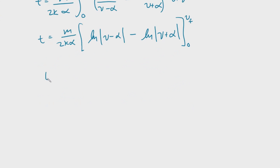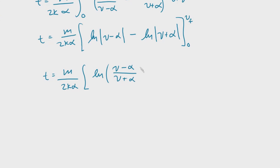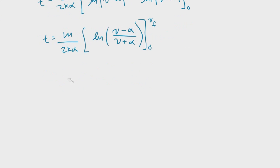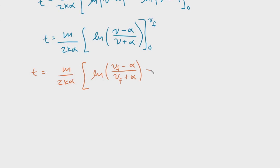Using logarithmic properties, we simplify to ln of the quotient |(V minus alpha)/(V plus alpha)|, evaluated from 0 to V final. Plugging in the limits: T equals M over (2K·alpha) times [ln|(VF minus alpha)/(VF plus alpha)| minus ln|(-alpha)/alpha|]. The lower limit gives ln of negative 1 in absolute value, which is ln(1) = 0, so that term vanishes, leaving just the upper limit term.